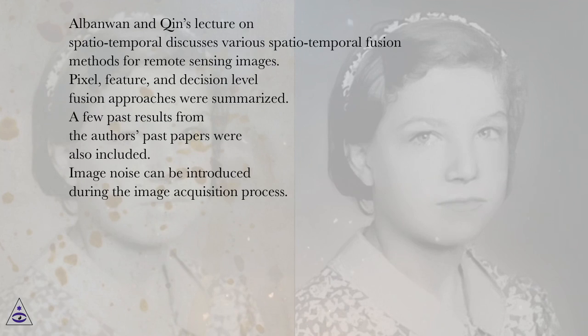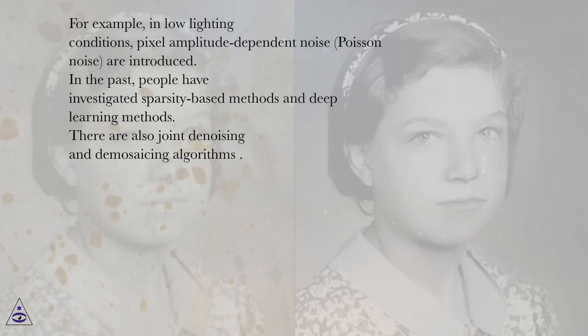Image noise can be introduced during the image acquisition process. For example, in low lighting conditions, pixel amplitude-dependent noise (Poisson noise) is introduced. In the past, people have investigated sparsity-based methods and deep learning methods. There are also joint denoising and demosaicing algorithms.